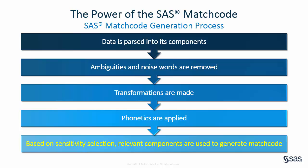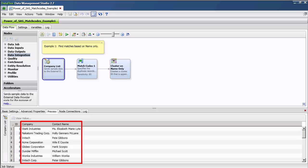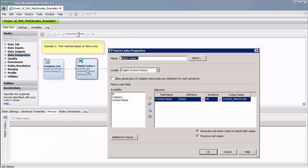Regardless of the data source, the matching engine creates the same match code as long as the underlying data remains the same and the same match definition and sensitivity setting are selected when the match code is generated. This enables matching across multiple data sources without constantly reprocessing and re-indexing the data, which is something that probabilistic matching systems cannot do. Here I have a set of company and contact name data. I am generating a match code for the contact name field using the name match definition from the English United States locale at a sensitivity of 85.